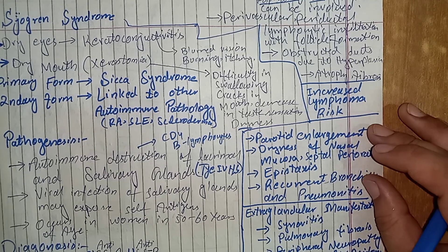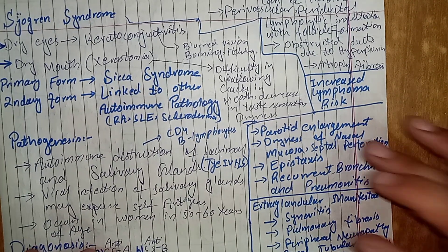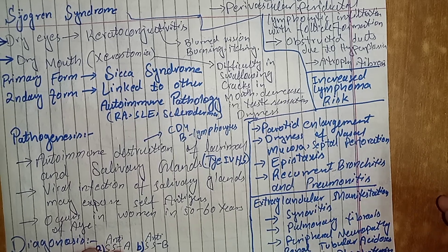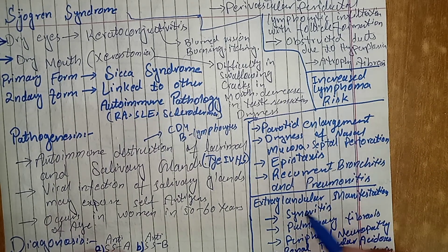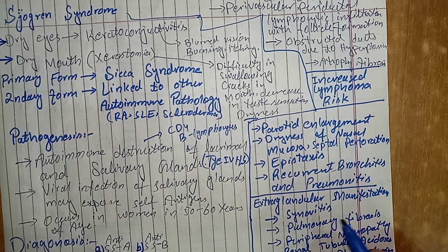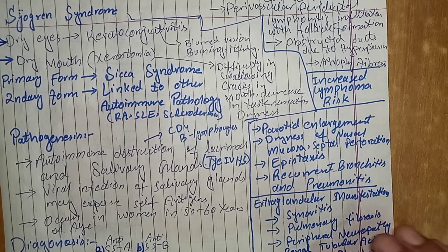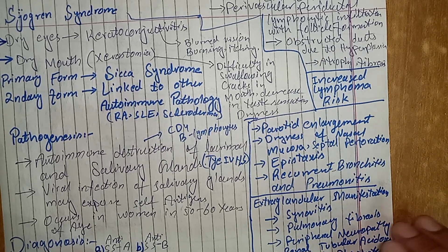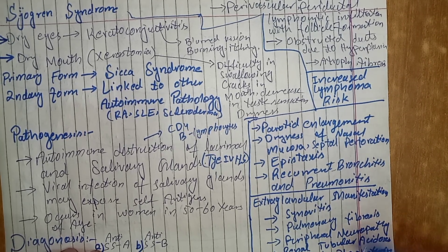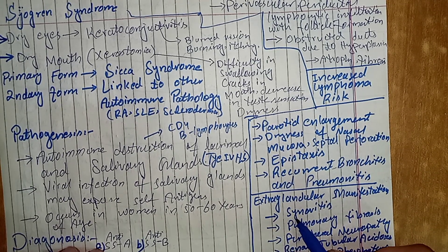In some cases, this disease can cause extra-glandular manifestations — manifestations which do not involve glands. If there is widespread inflammation, it can damage multiple tissues and organs of the body. These extra-glandular manifestations include synovitis, which is inflammation of the synovial membrane and can cause arthritis-like symptoms.